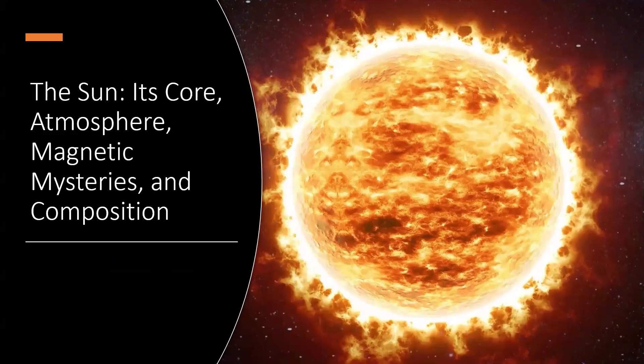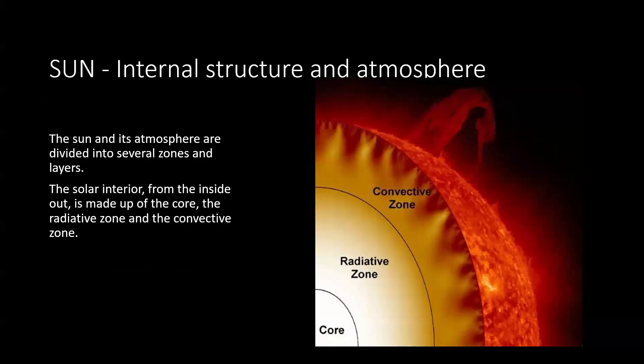Now we're going to go into the actual structure of the Sun, its core, its atmosphere, its magnetic mysteries, and its composition. The Sun itself and its atmosphere are divided into several zones and layers. The solar interior from the inside out is made up of the core, the radiative zone and the convective zone.